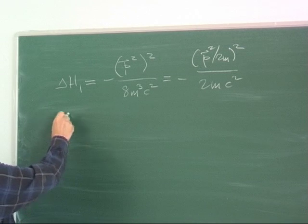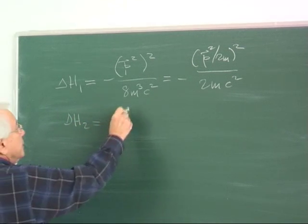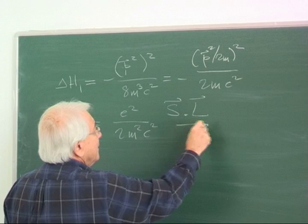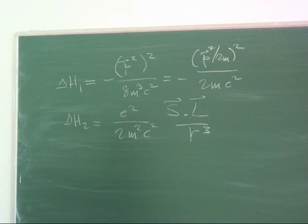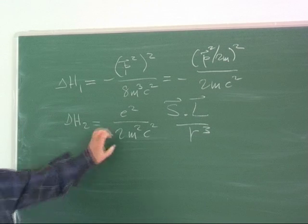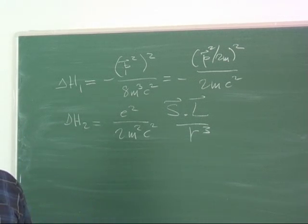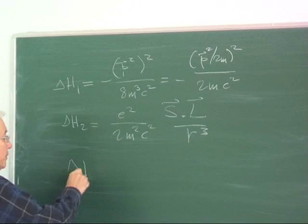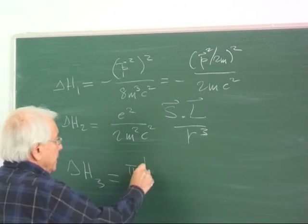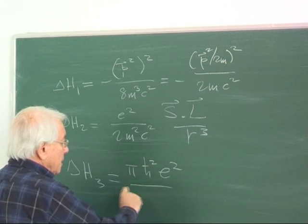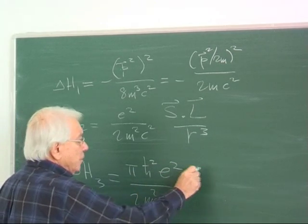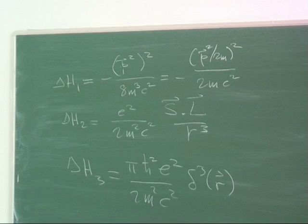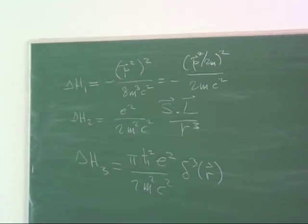The second term was the spin-orbit term. We were able to construct it to a certain degree, up to a factor which had to be corrected with experimental input. The last term was the Darwin term. As I said, we have just borrowed it from relativity — we have no way of having an intuition for it or being able to construct it independently.